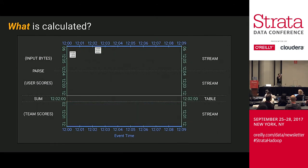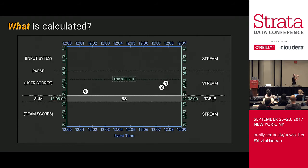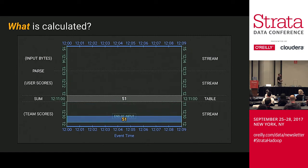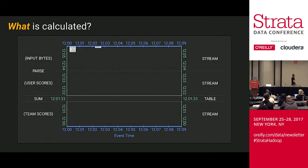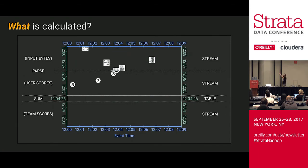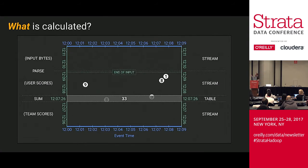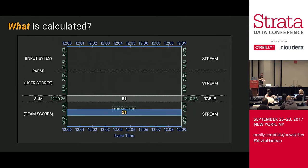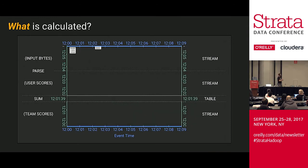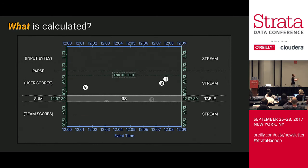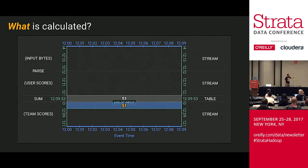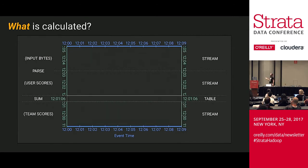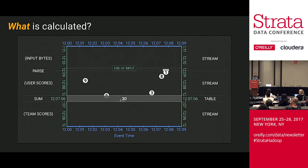In the animation, data flow in as a stream because they've been read and hit the parse operation, which does nothing to bring them to rest. They transform into parsed records but keep flowing until they hit the grouping summation operation, where they come to rest and start to accumulate. The team score accumulates there. It's not until we reach the end of the input - because that's how batch processing works - that we actually trigger that table into a stream and produce the result downstream.